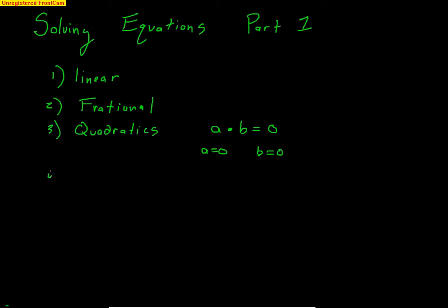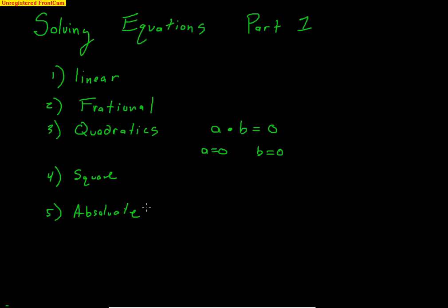The zero product property allows us to split apart products of expressions as long as they equal zero — that's going to help us solve quadratics. The fourth thing we're going to look at is square root equations. Remember, to get rid of a square root you need to square both sides. The fifth type is absolute value equations. They can be a little bit tricky, but they're not too bad as long as you understand the basic idea.